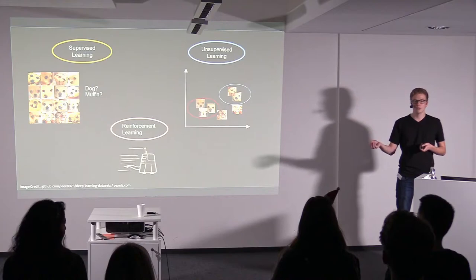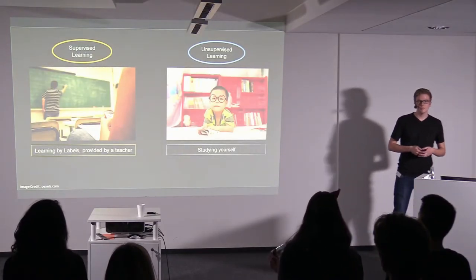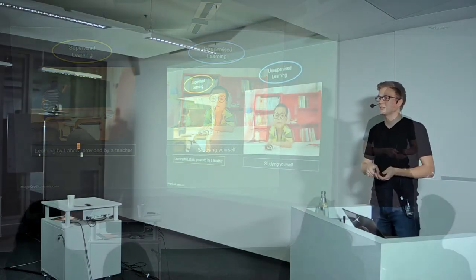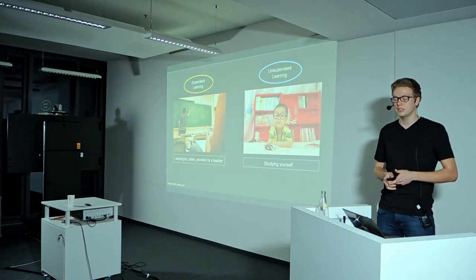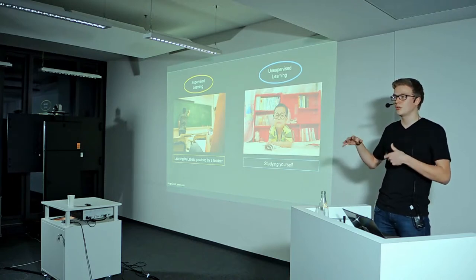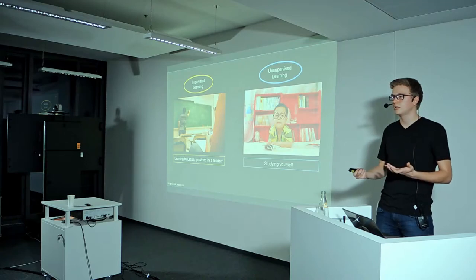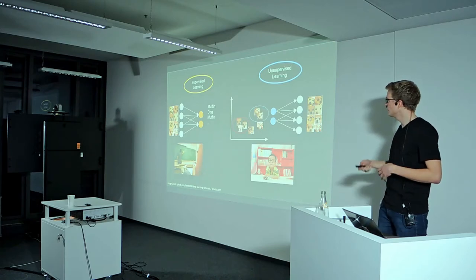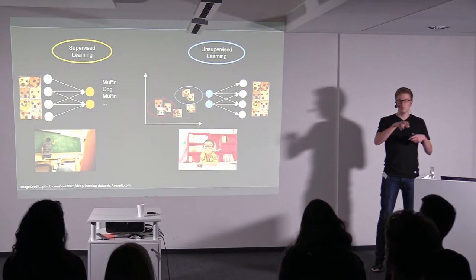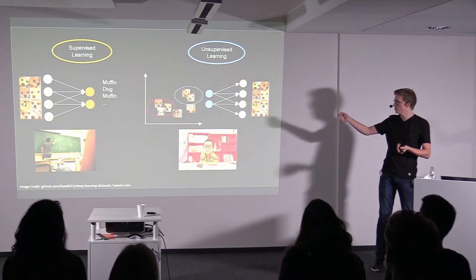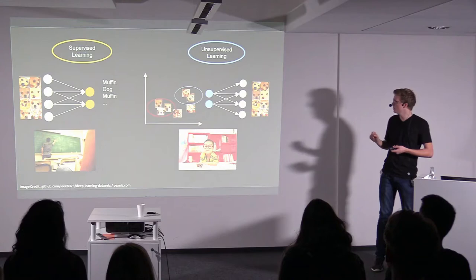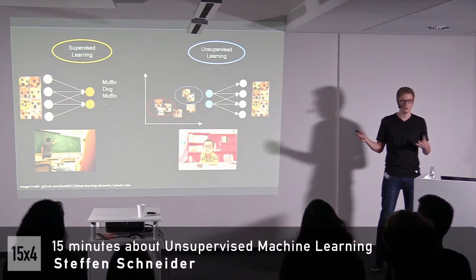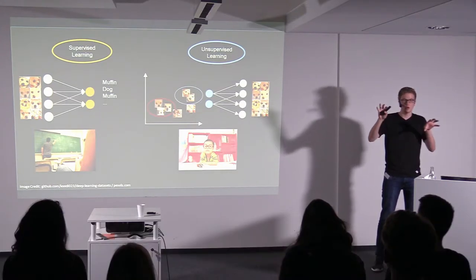In supervised learning we have some sort of teaching signal - a dataset with labeled data, for example images of dogs and muffins where we know exactly which are which. In unsupervised learning we only provide the images without any further information, so the algorithm has to study for itself and find meaningful representations. It boils down to inferring the underlying representation - such as counting black dots in images - which is already a good proxy for separating classes without ever knowing those classes exist.